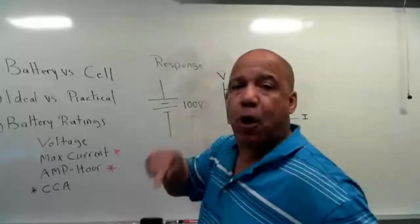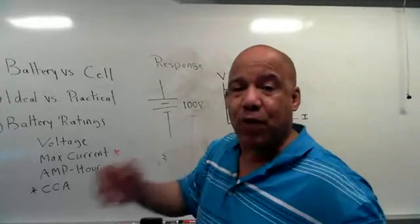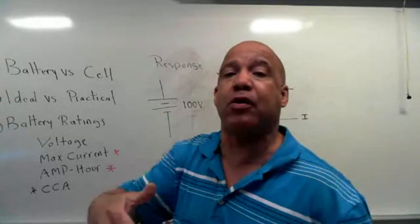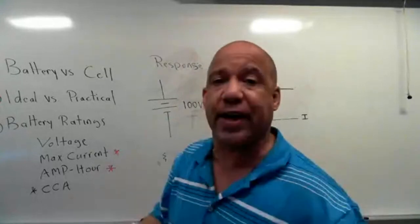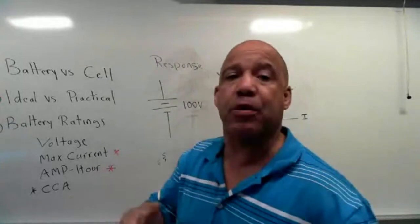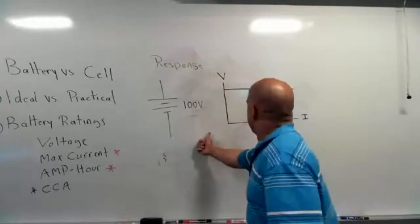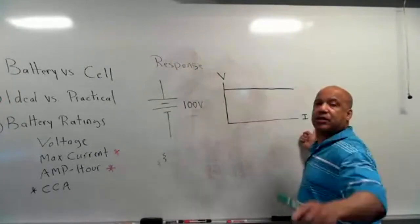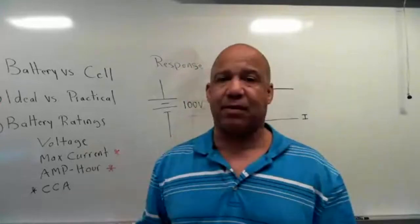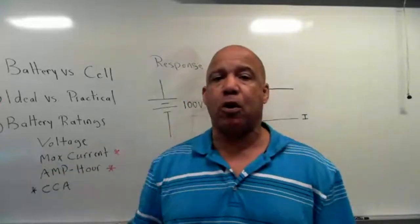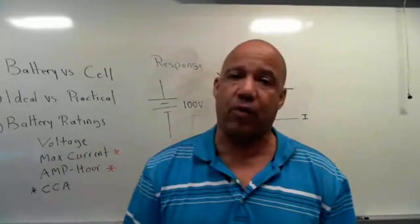Think about what that means. The voltage is constant no matter how much current you draw. What's really happening is you're getting joules per second — power, which is energy per unit time. This graph goes all the way to infinity, saying this thing can deliver an infinite amount of power. We know that's not right.